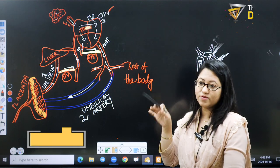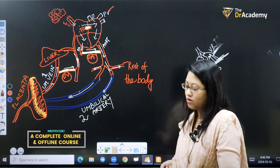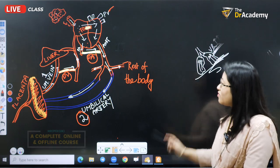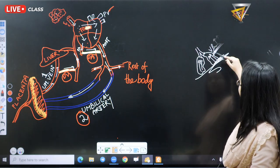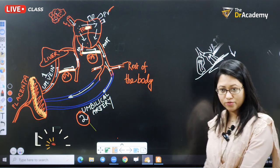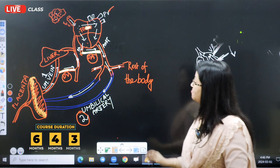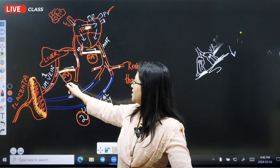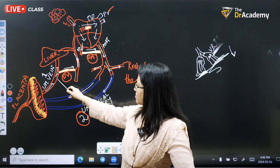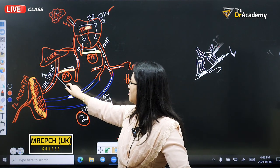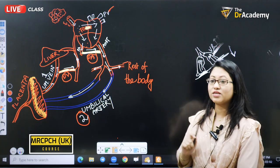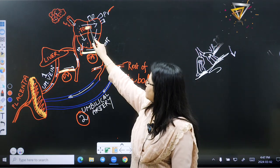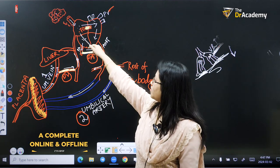This fetal circulation is very important — you must memorize and understand it. Key exam points: the number of umbilical arteries and veins; in the fetal lung, vascular resistance is high, not low; the ductus venosus carries blood from the umbilical vein to the inferior vena cava — not the superior vena cava. They will try to confuse you with these terms, asking which statement is right or wrong.